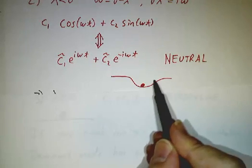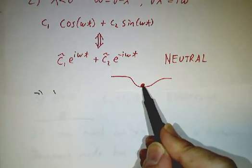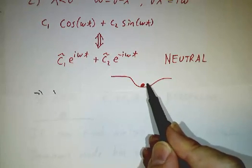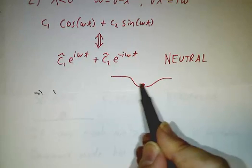It never escapes the well, but it never settles down either. At least not if there's an... you know, it'll settle down if you had friction. But these equations are describing a system with no friction and it would just go forever. That's what we call neutral.